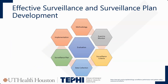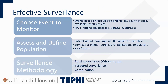Now that we've talked about methodology and measures, what goes into effective surveillance and developing a surveillance plan? The first thing is to choose your event — what do you want to look at, such as an HAI. A lot of times those events will be tied into your surveillance methodology, and these things happen simultaneously. Look at what specific event you are going to monitor, what resources, and what facility alignment you have.